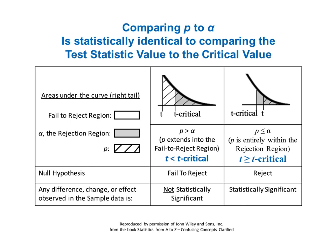This table also illustrates that comparing P to alpha is statistically identical to comparing the test statistic to its critical value. The test statistic value T defines the value for P, so given the test statistic's distribution, T and P contain the same information. Alpha and the critical value are similarly related — we start with the cumulative probability alpha, and that gives us the critical value, T critical. So comparing P to alpha is statistically identical to comparing T to T critical. If T is less than T critical, then P must be greater than alpha; and if T is greater than T critical, then P must be less than alpha.